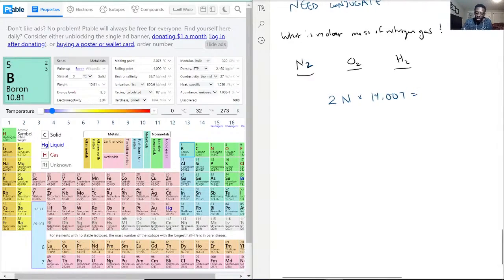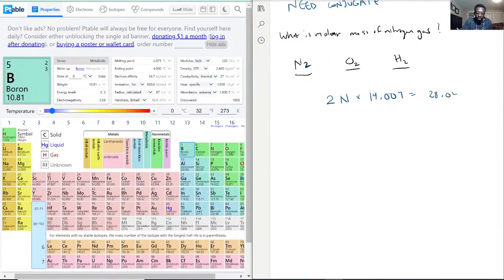So let's see here. That is equal to 28.014, so now to write this we have 28.014 grams per mole of nitrogen gas. This right here is going to be your answer for that.